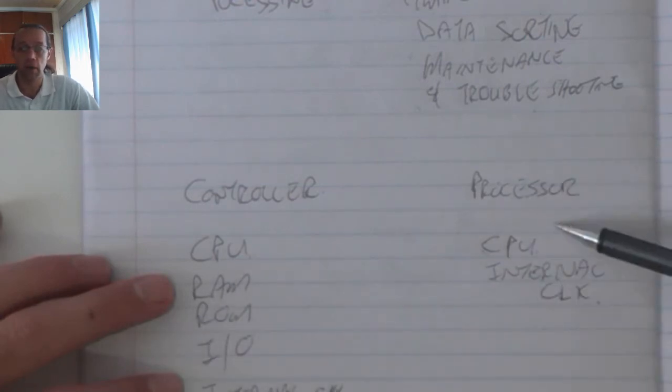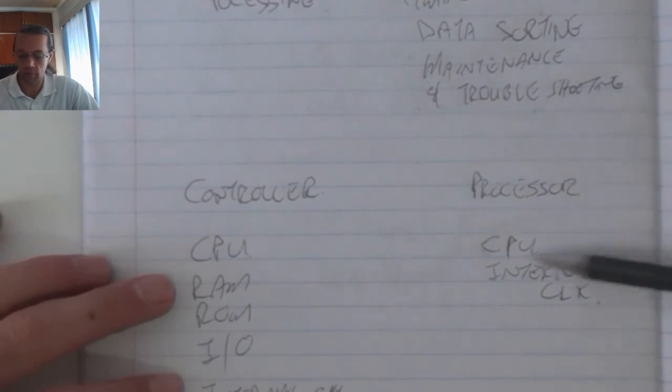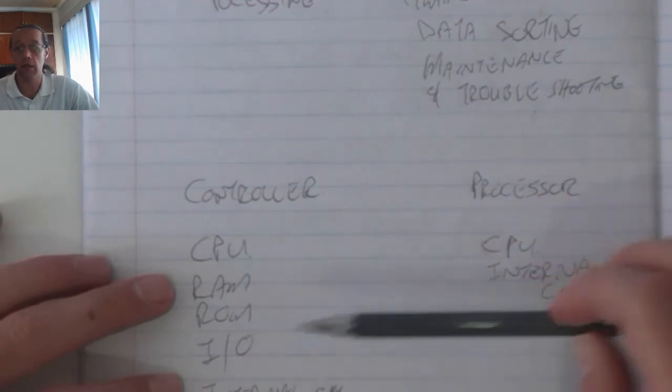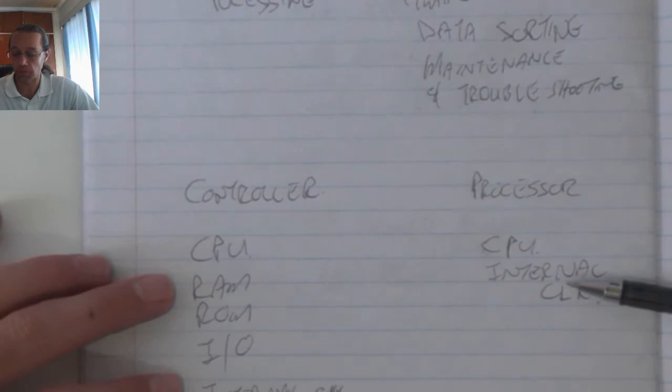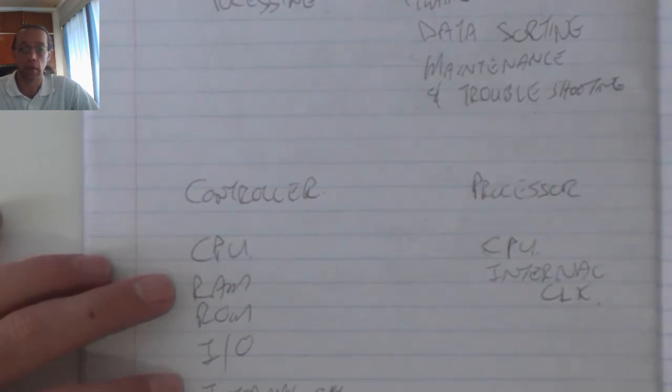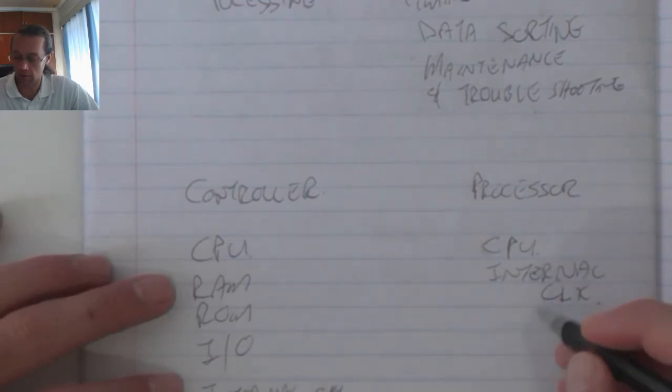However, the processor, because it does not have all these other aspects, needs to be added separately. And because it doesn't have all those aspects, it has the ability to operate at much higher clock speeds.